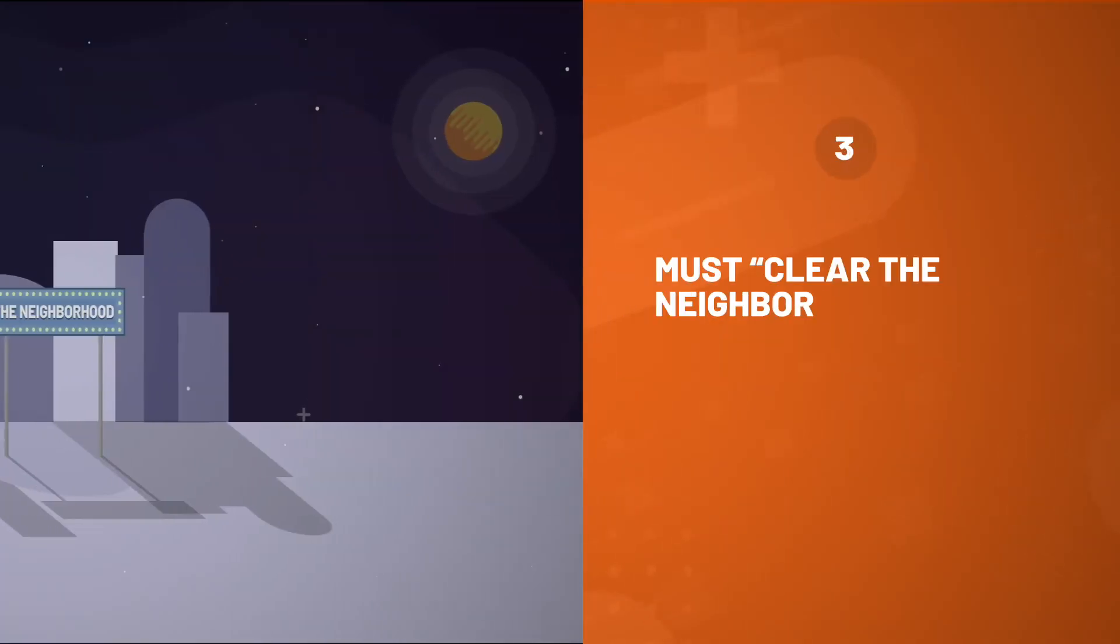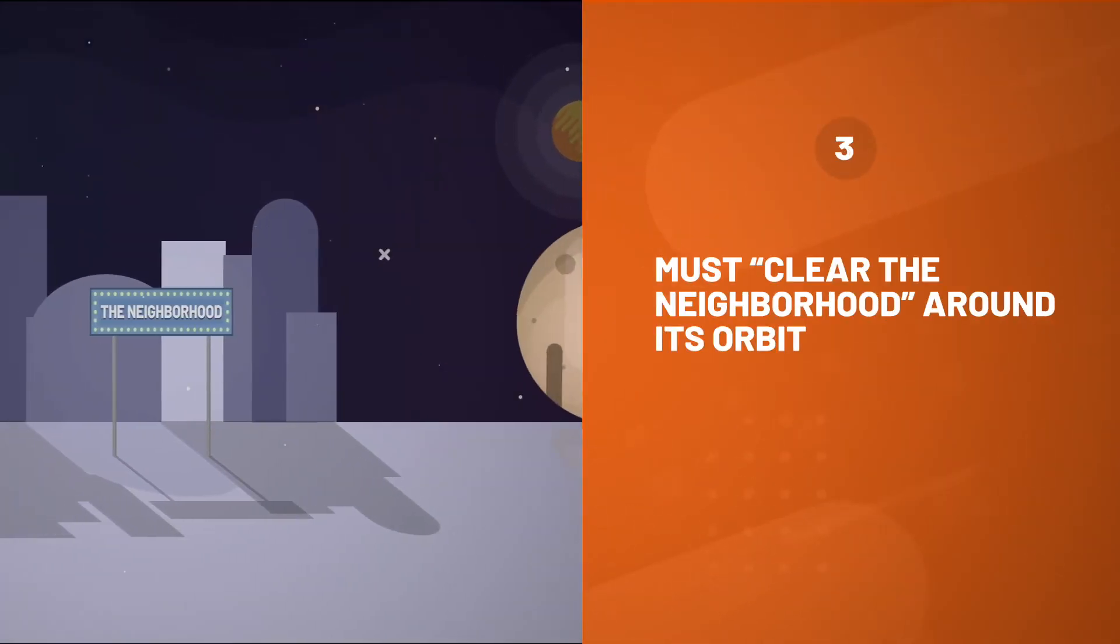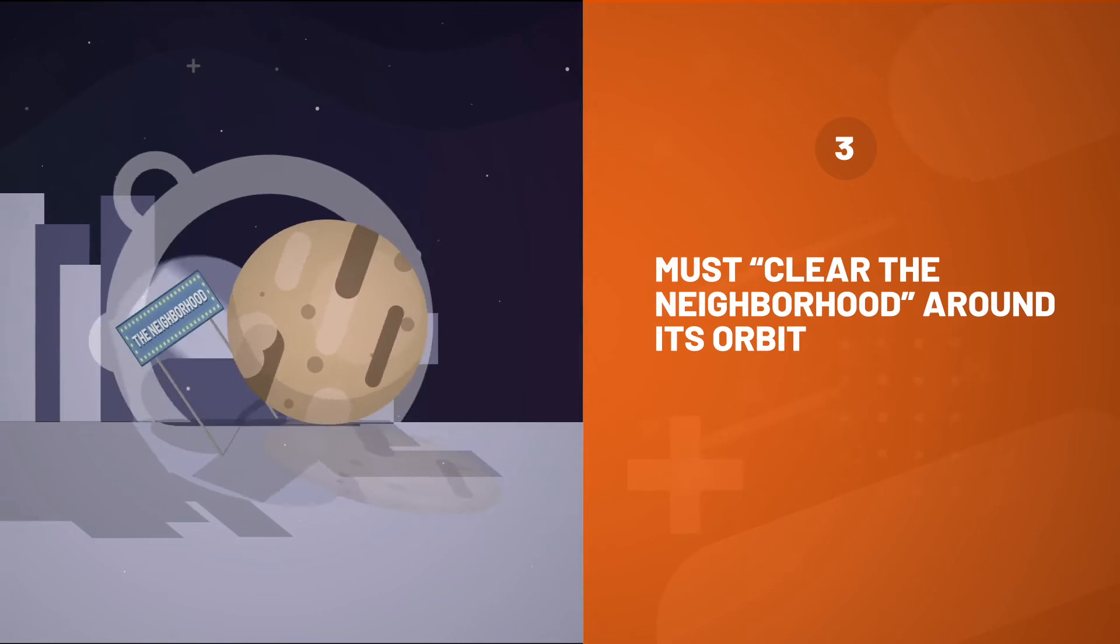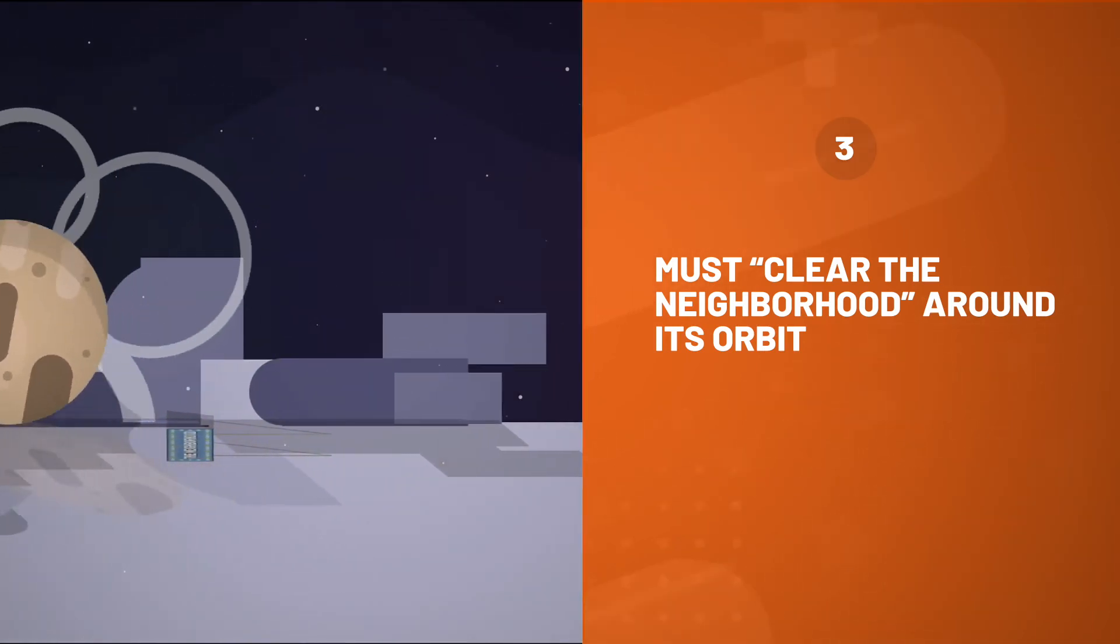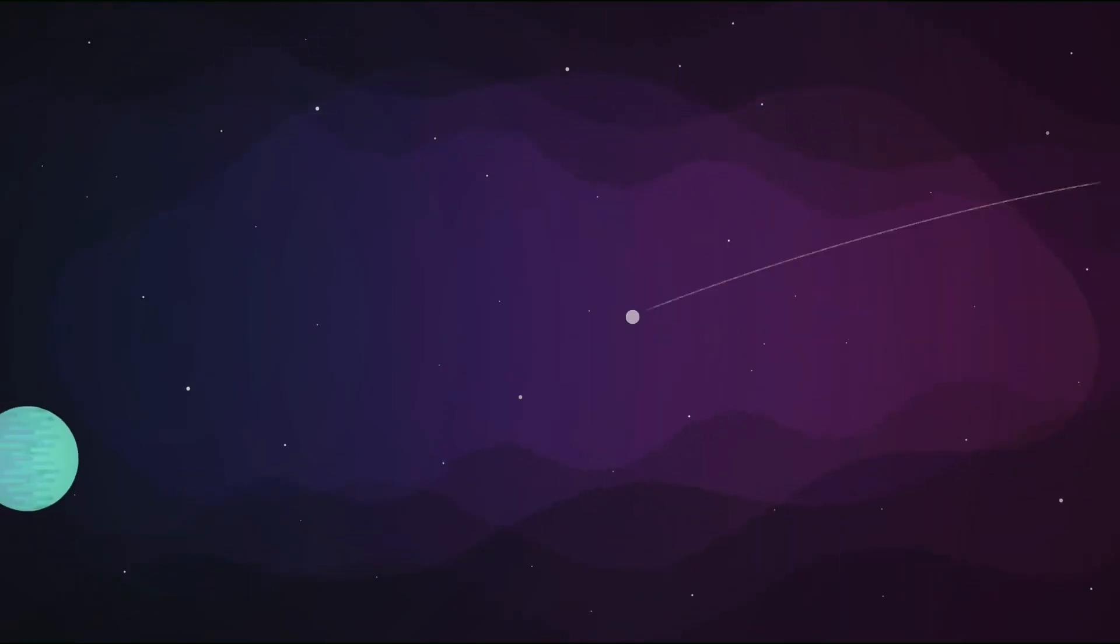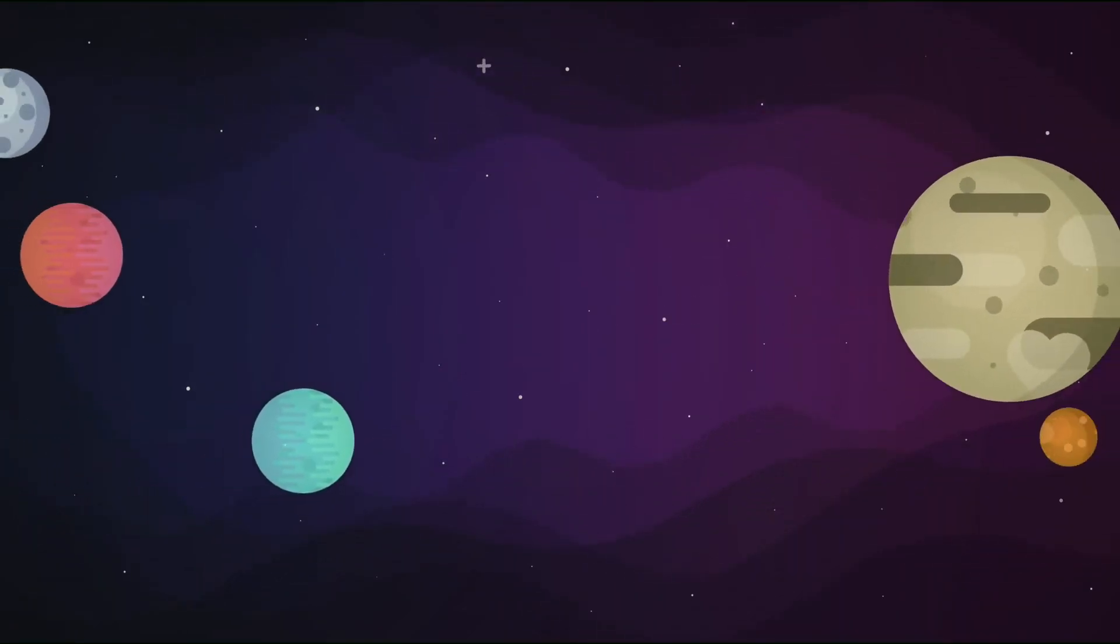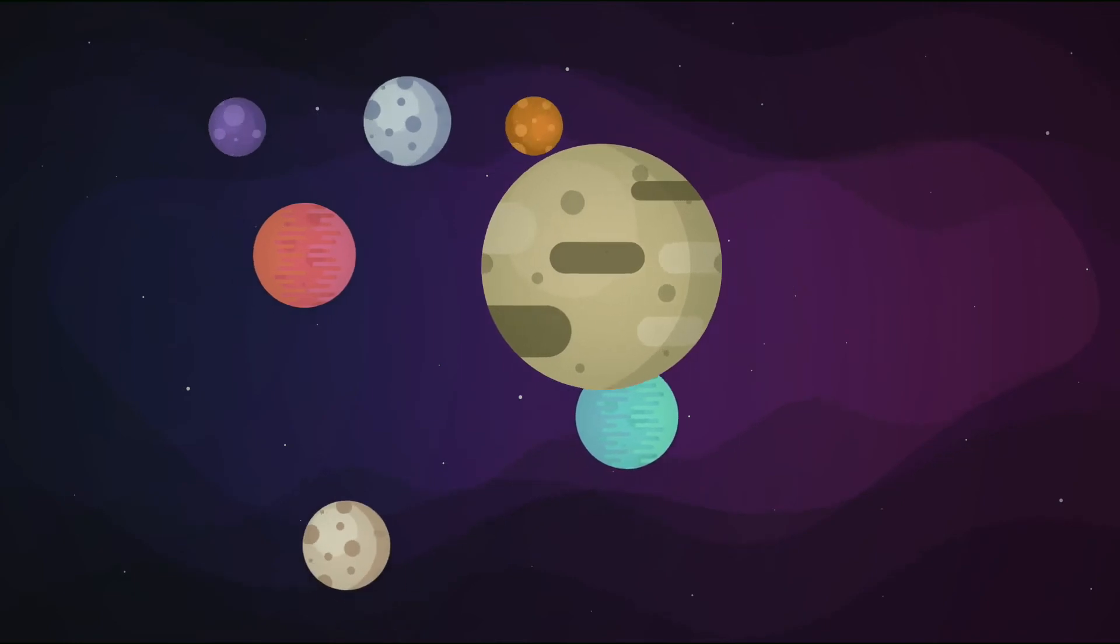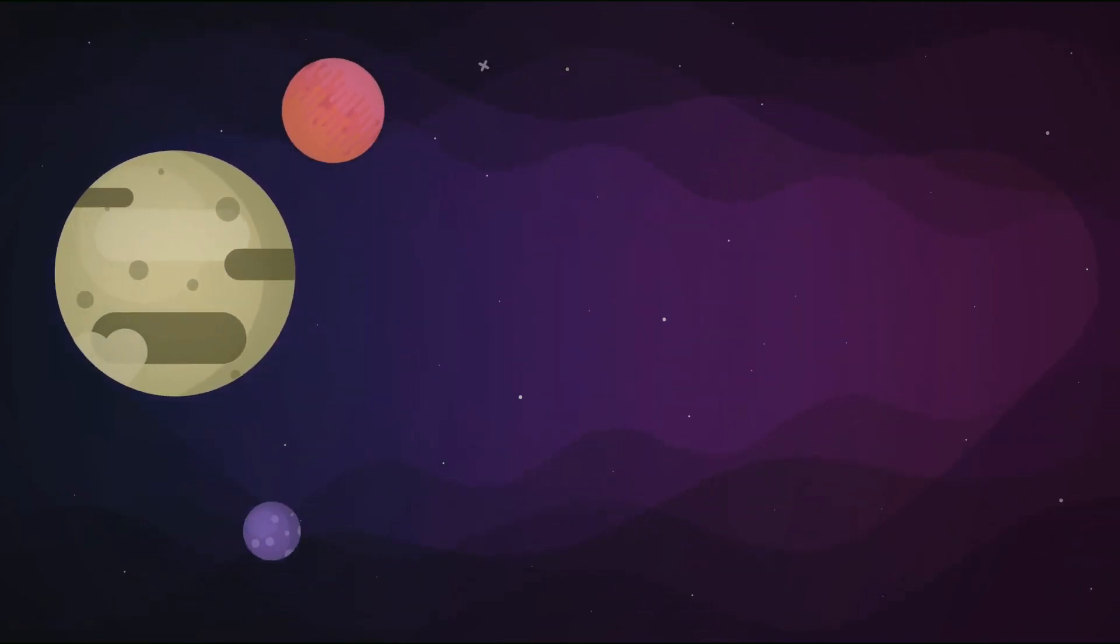And finally, as a planetary body forms, it must clear out the neighborhood in its orbit. Planets can clear their neighborhood by being massive enough to be gravitationally dominant. That way, all other cosmic bodies nearby will either be pulled in and consumed, or flung away by the body's gravitational influence.